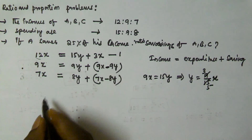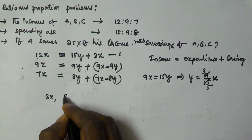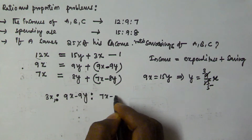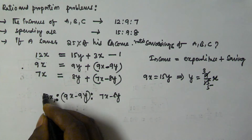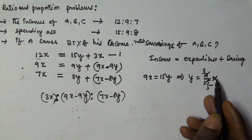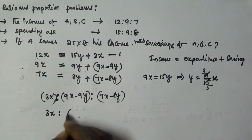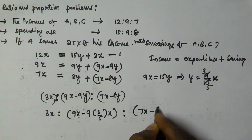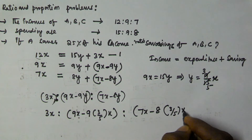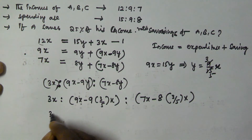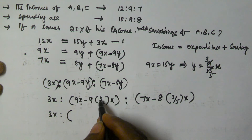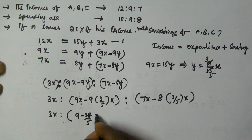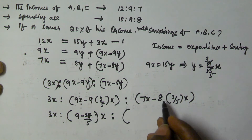A's saving is 3x, B's saving is 9x minus 9y, and C's saving is 7x minus 8y. Substituting y equals 3/5 x: B's saving becomes 9x minus 9×(3/5)x equals 9x minus 27/5 x. C's saving becomes 7x minus 8×(3/5)x equals 7x minus 24/5 x.